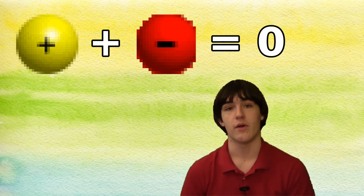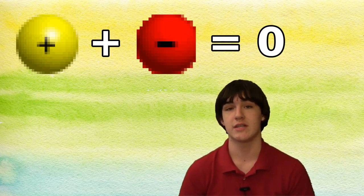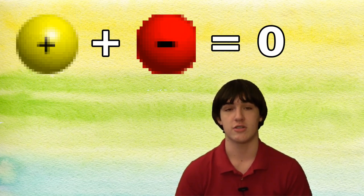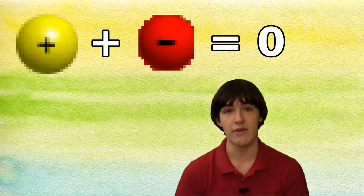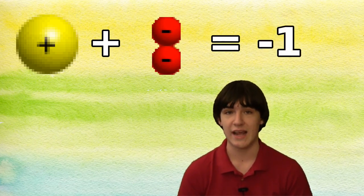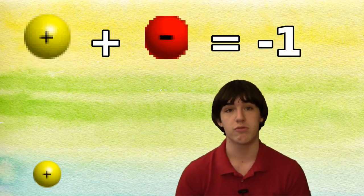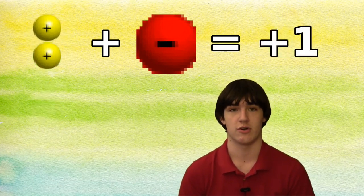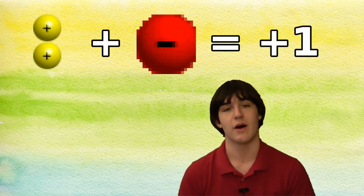However, in an ion, where there is an imbalance of protons and electrons, the charges spill over. If there are more electrons, you get a negative charge because of their uncountered negativeness, and if there are more protons, you get a positive charge because of their uncountered positiveness.